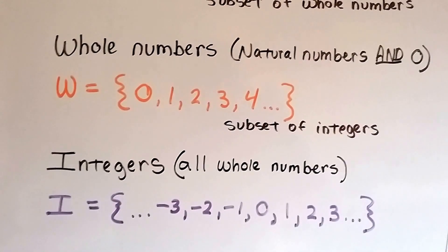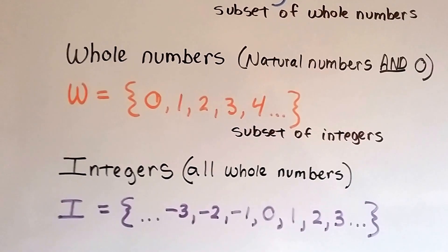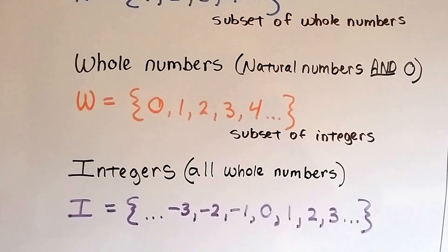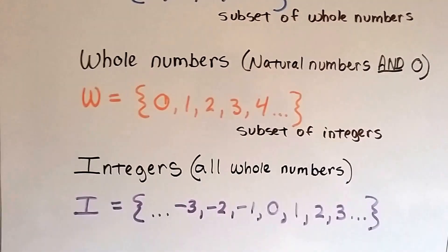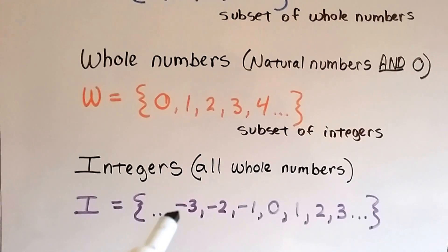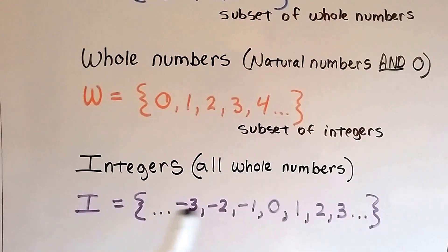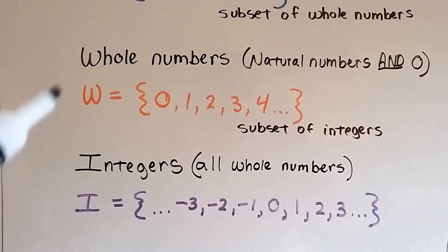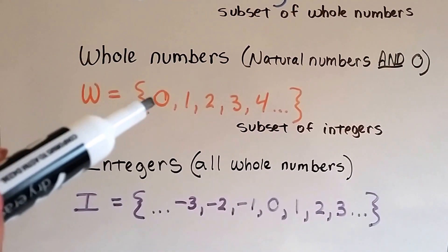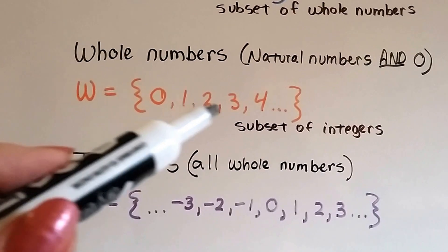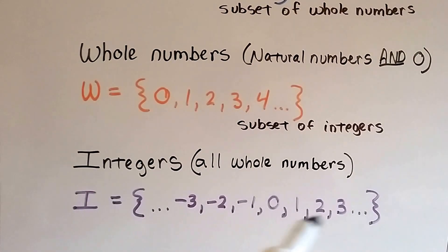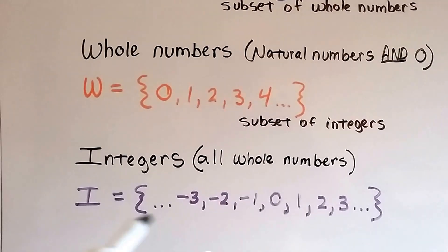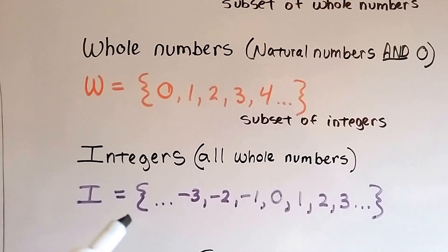Integers — that's all whole numbers, so that means it includes the natural numbers. Integers are negative and positive numbers, including zero. So whole numbers, because they have 0, 1, 2, 3, 4, are a subset of the integers.